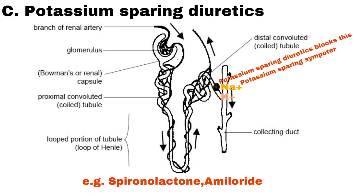Number 3 is Potassium Sparing Diuretics. In the distal tube there is one more channel called the Potassium Sparing Channel. This channel reabsorbs sodium and secretes potassium. Because of reabsorption of sodium, blood pressure increases. Potassium Sparing Diuretics block this channel and stop the reabsorption of sodium, leading to a decrease in blood pressure. Examples are Spironolactone and Amiloride.